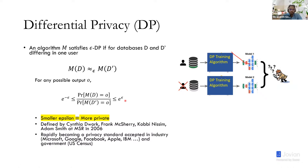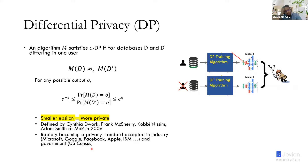This definition was introduced in theory around 2006, and since then it has been increasingly adopted in industry — Microsoft, Google, Facebook, Apple, IBM. Whenever they train models on private data, they do it using differential privacy and report the epsilon value, such as epsilon equal to one or two. Moreover, the U.S. government also believes in this technology. The latest U.S. census data was released using differential privacy, because the government felt there were significant privacy risks in releasing census data without any privacy mitigation measures.